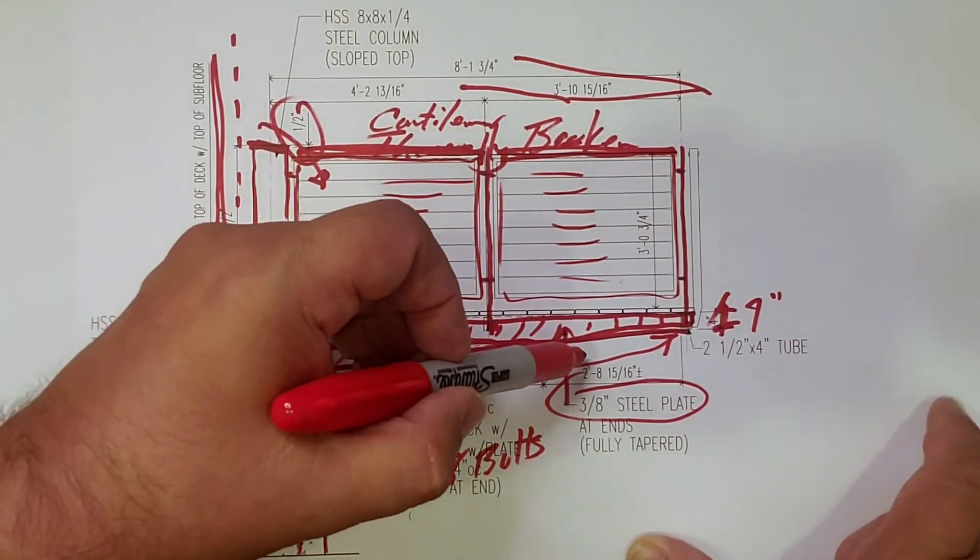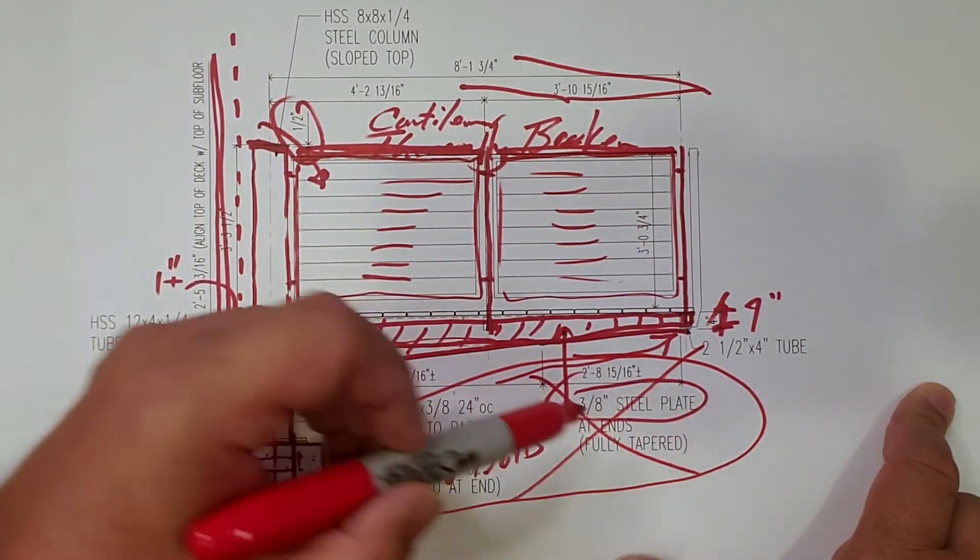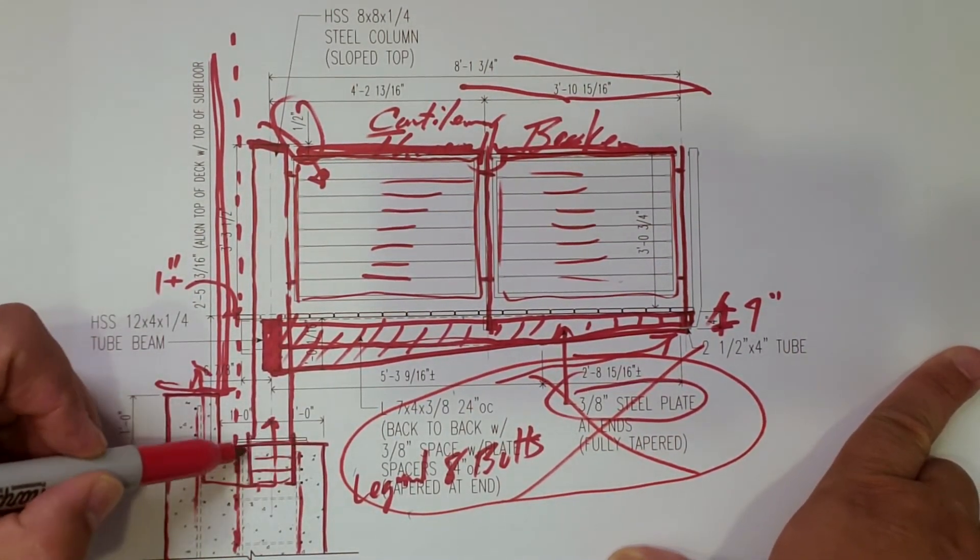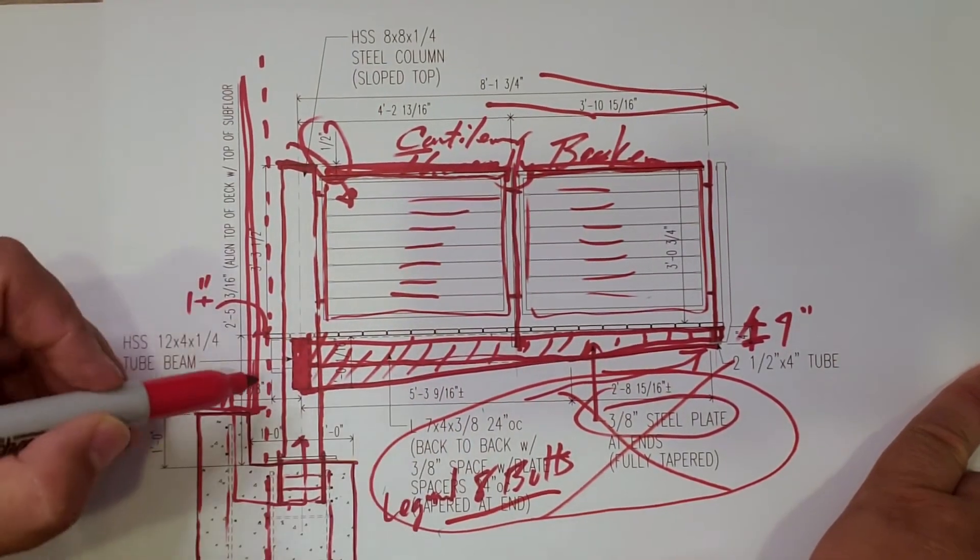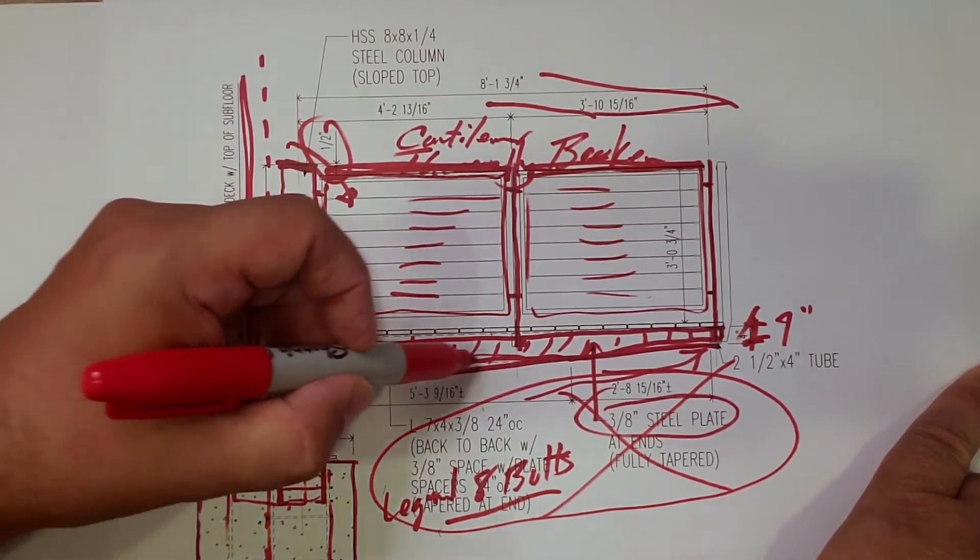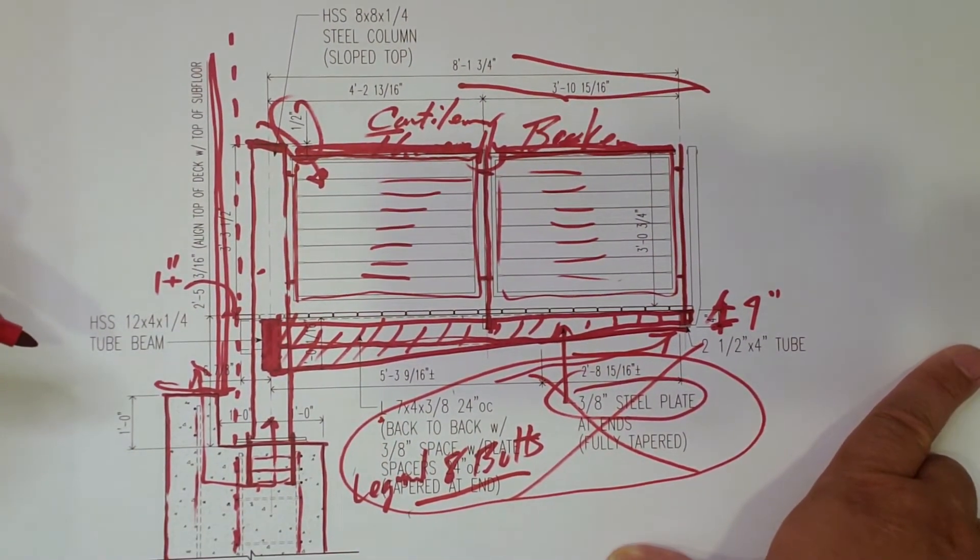So, yes, there is nothing under here. So, it is only supported by 8 bolts, 2 columns, 1 giant tube. It goes to a bunch of 7 inch, 24 inch on center, steel angles that basically fly out into the air.